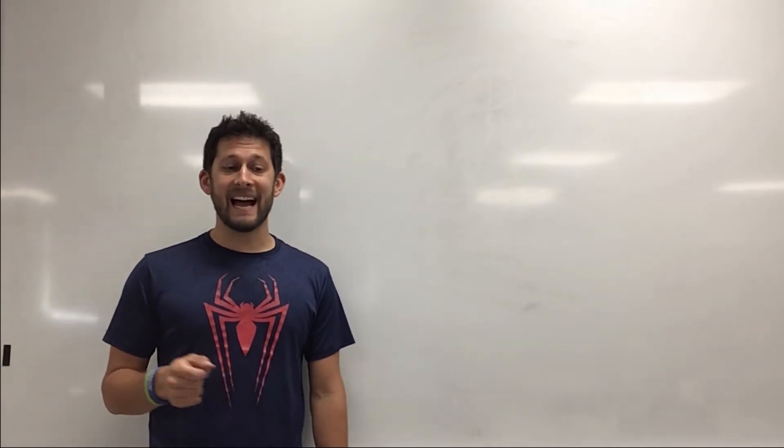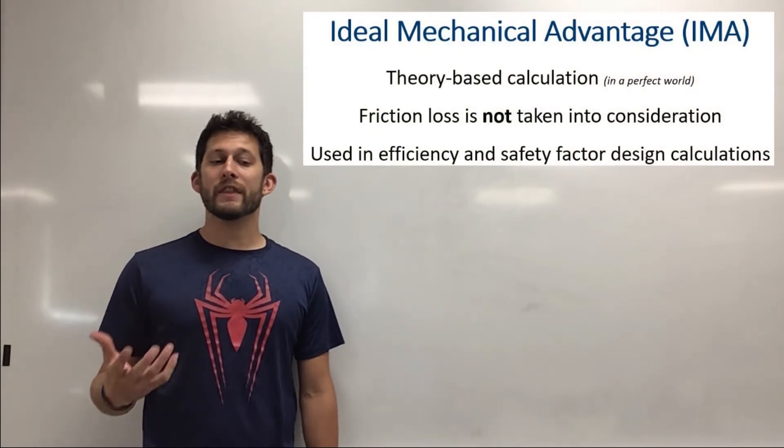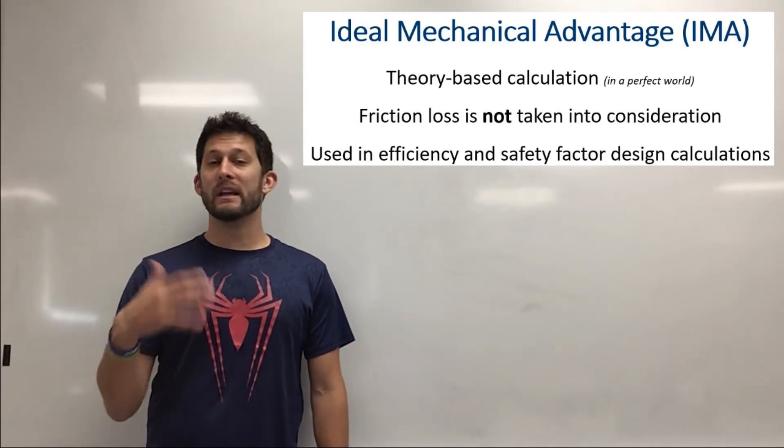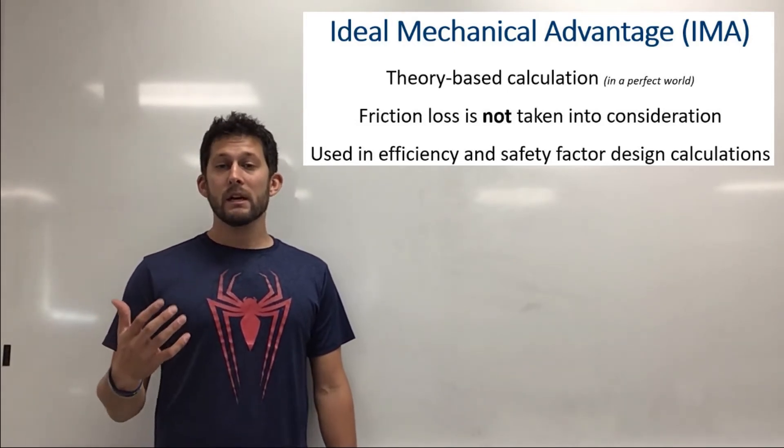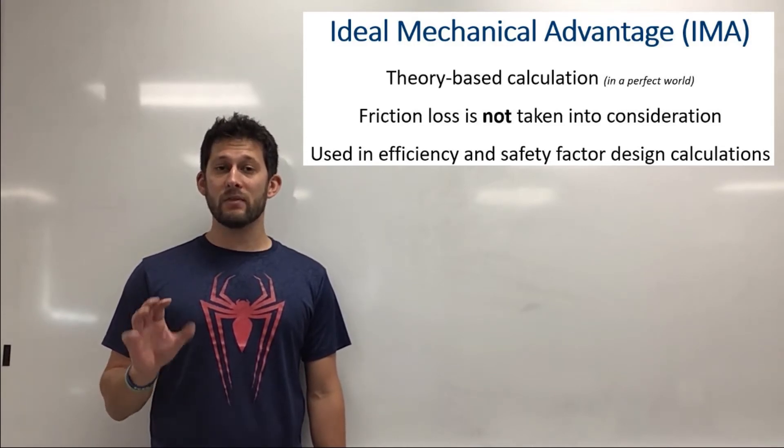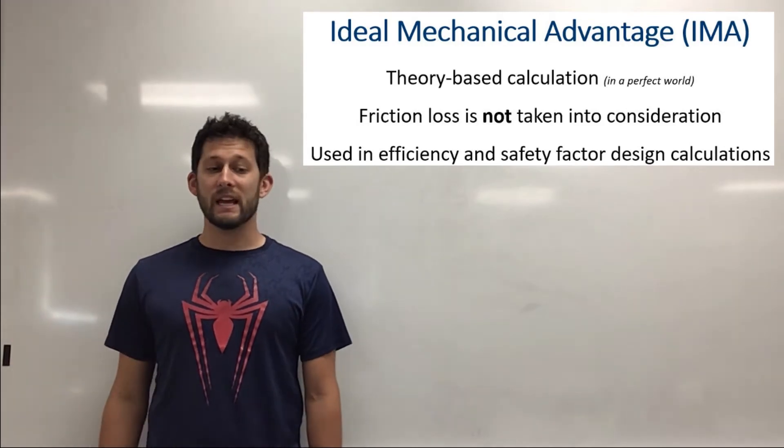The first one that we're going to talk about is ideal mechanical advantage, and that is what we call a theory-based calculation which means in a perfect world without friction, without heat loss, without energy loss, this is what the mechanical advantage of a simple machine would be. So in this case we are not taking friction or any outside forces into account.